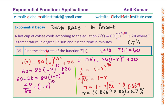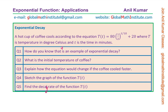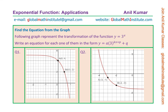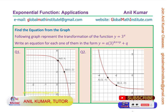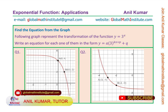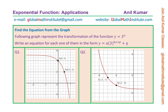The concept is now clear. We have solved all five questions, with important points to consider, especially that the decay rate was calculated in percent. The next question involves finding the equation from a given graph, or explaining the transformation of a function from a given graph. You can watch the playlist for solutions to similar questions.